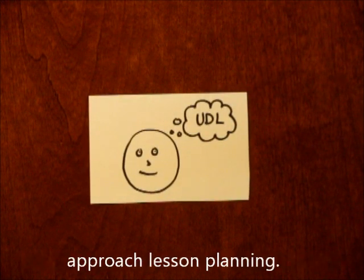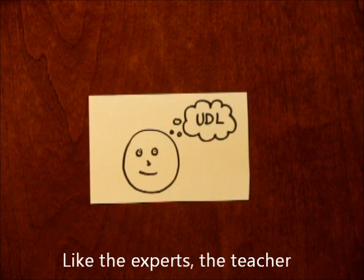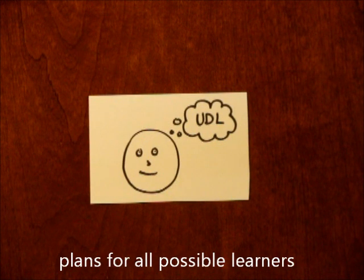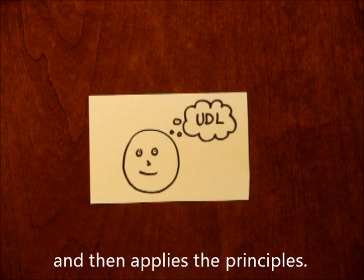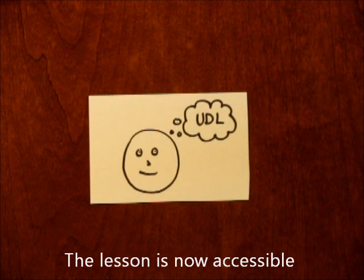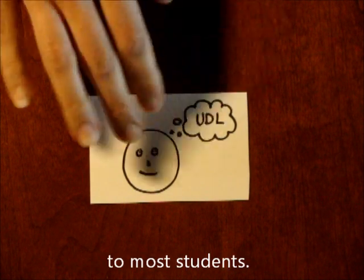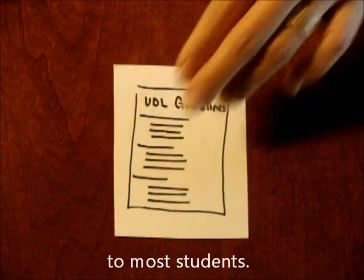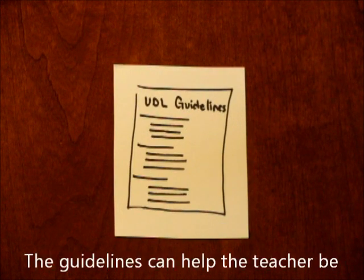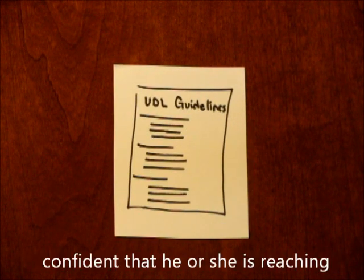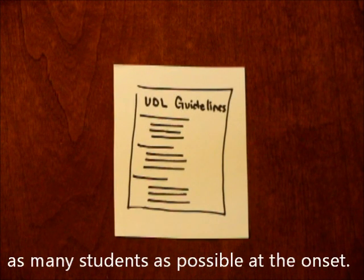This is how teachers implementing UDL approach lesson planning. Like the experts, the teacher plans for all possible learners and then applies the principles. The lesson is now accessible to most students. The guidelines can help the teacher be confident that he or she is reaching as many students as possible at the onset.